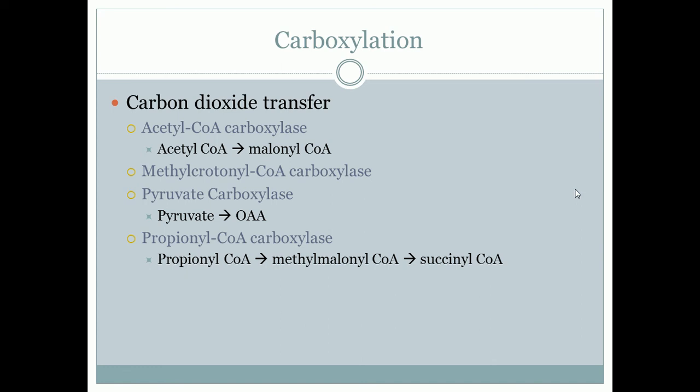Propionyl-CoA carboxylase adds a carbon to propionyl-CoA. When you carboxylate propionyl-CoA, it forms methylmalonyl-CoA, which requires biotin. Methylmalonyl-CoA is further converted into succinyl-CoA, which can be used as a precursor for heme synthesis or can feed into the TCA cycle — so that one has dual purpose.